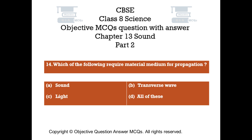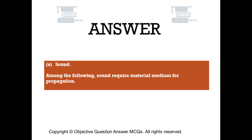Question number 14. Which of the following requires a material medium for propagation? Option A: Sound. Option B: Radiation. Option C: Light. Option D: All of these. The right answer is option A — Sound. Sound requires a material medium for propagation.